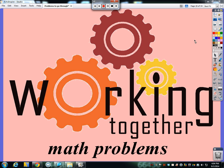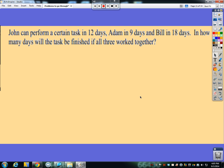In this video we are going to discuss some working together type of problems, as some of you might have seen. We're going to look at two different types of problems here. They're both working together type of problems, but there's two different ways you'll see them. So John can perform a certain task in 12 days, Adam in 9, and Bill in 18 days. In how many days will the task be finished if all three worked together?